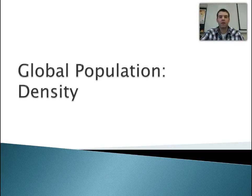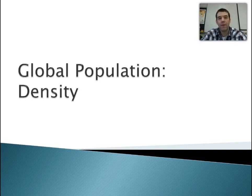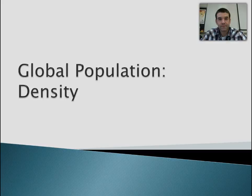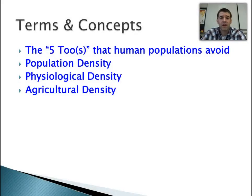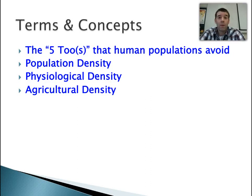Today's video we're going to be looking at global population in the form of the different types of densities that we can use to describe the distribution of population over the Earth's surface. We talked a little bit about the fact that we have now crossed 7 billion in global population. Now we're going to talk about how it's distributed.